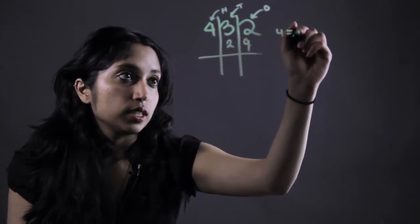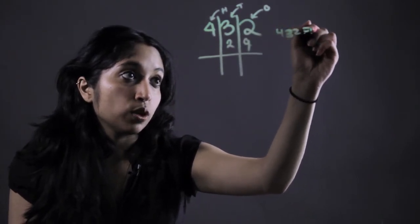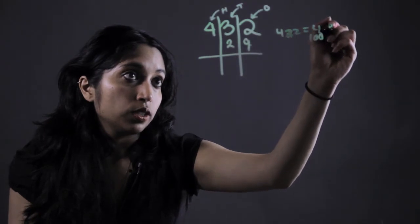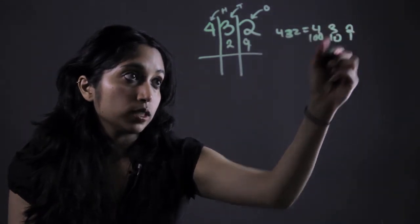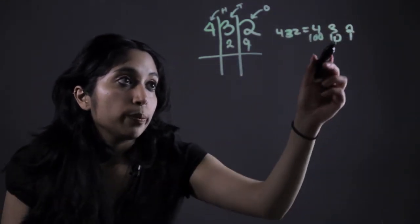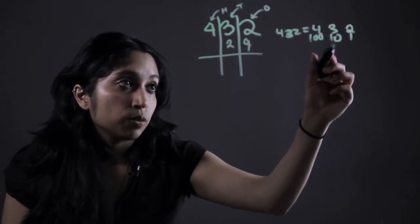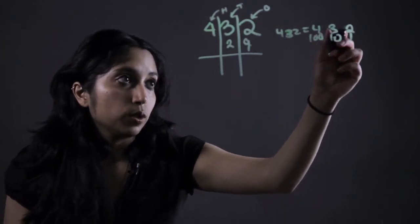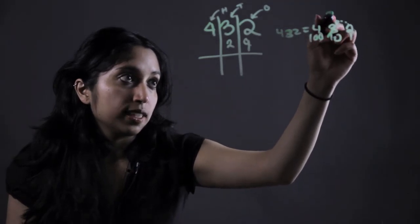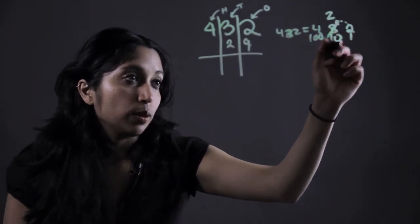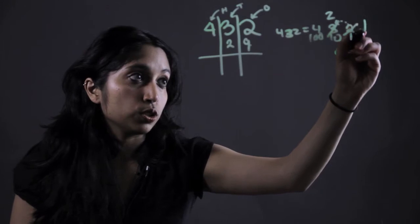So say 432 is equal to 4 one hundreds, 3 tens, and 2 ones. Now if we borrow one of these tens from the three, let's say we do that. We come over here, we ask them because we don't have enough, take that down to 2 tens and now we have 10 ones so that's going to change into a 12.